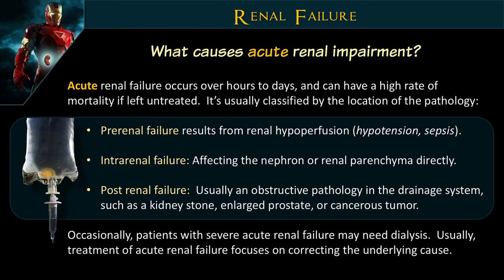What causes acute renal disease? This can happen over hours or days depending on the pathology. Pre-renal failure involves hypoperfusion — sepsis, trauma, hypovolemia — where there just isn't enough blood flow going in. Intrarenal failure is where the actual filtration system on the inside stops working and can't filter any longer. Post-renal failure is an obstructive or drainage problem such as kidney stones, enlarged prostate, or tumors. Any of these can cause renal failure and shut down the kidneys.